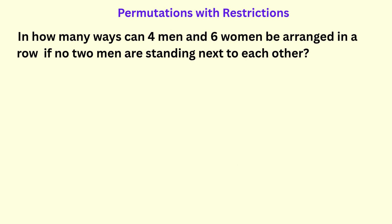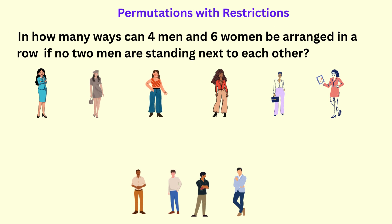In how many ways can four men and six women be arranged in a row if no two men are standing next to each other? We have ten persons in total — four men and six women — but the condition is that no two men can stand next to one another, meaning we need to place the men with at least one woman separating them.